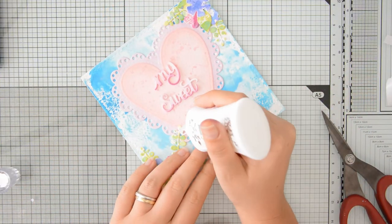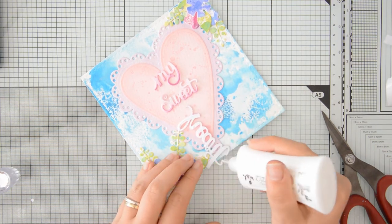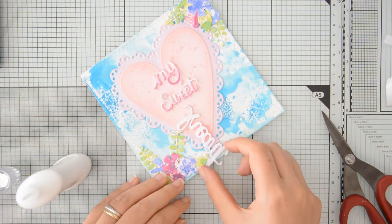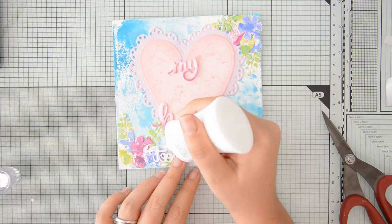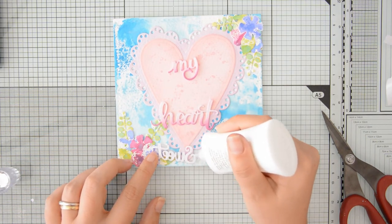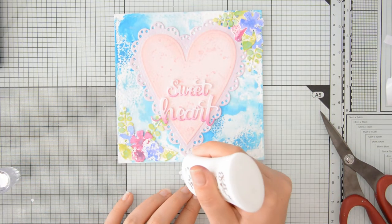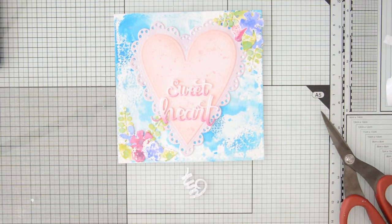Finally, I die cut my sentiments two more times from some white cardstock and I stack the die cuts on top of each other, so that I have some nice dimension and the sentiment stands out from the background. And I glue that to my card base using some Nuvo Glue.